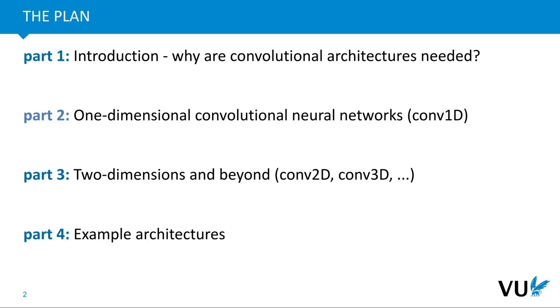In the second part, we will be talking about one-dimensional convolutional networks, where we will focus on getting the concepts clear. In part three, we will scale up to more dimensions — two dimensions, three dimensions, and so on — and get a bit more theoretical. Then in part four, we will look at some example architectures.